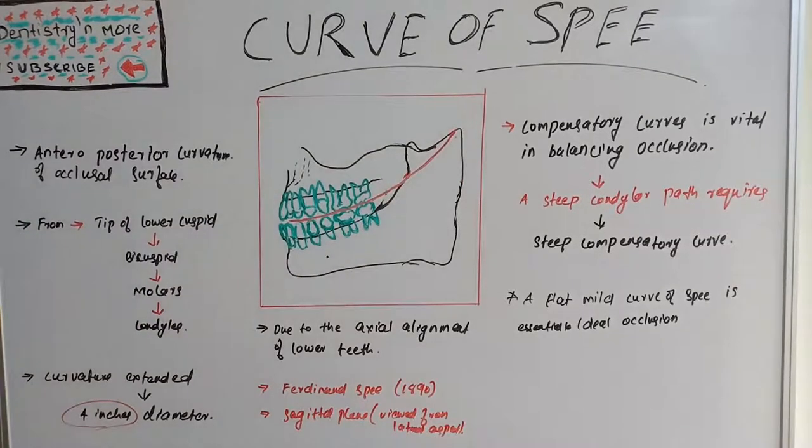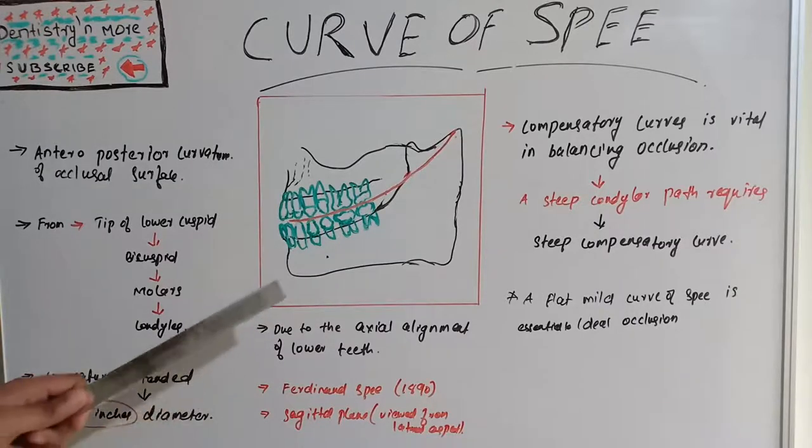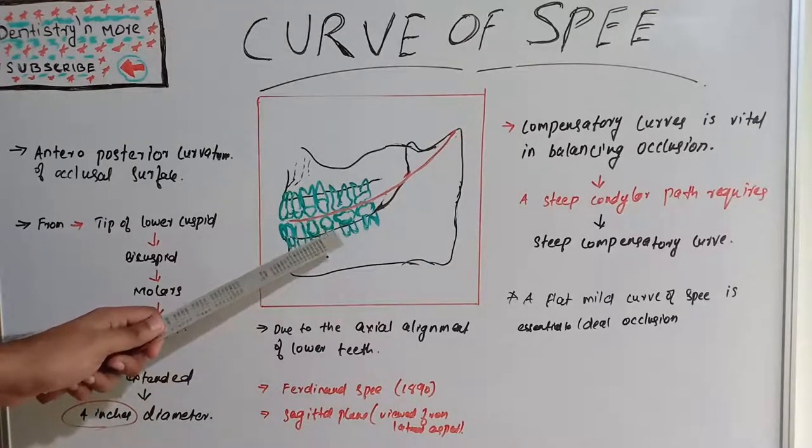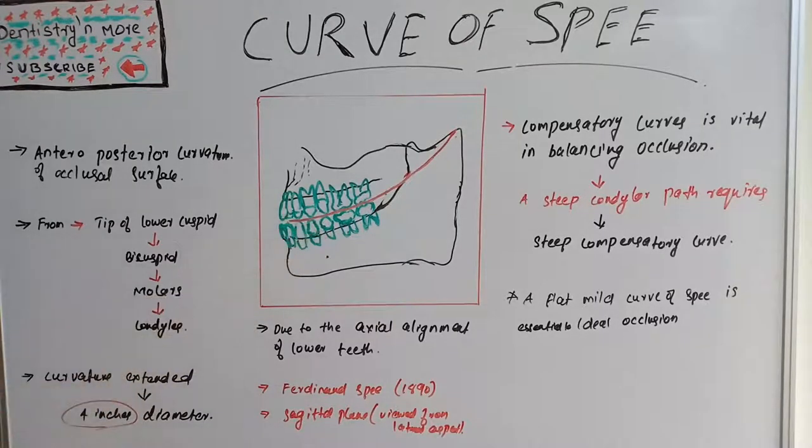This curve of spee has importance in orthodontics, prosthodontics and restorative dentistry. This two dimensional curve moves upward from anterior to posterior direction. If measured at the deepest point near premolar region, it has 1 to 1.5 mm of concavity, and that is an acceptable range.